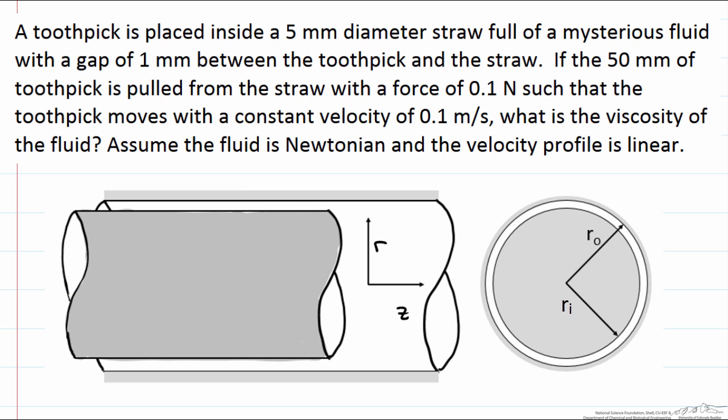So you can see I have drawn cylindrical coordinates, our radius in the vertical direction and our z axis in the longitudinal direction. We have some inner radius of our toothpick and some outer radius of our straw. Now what is happening is we are pulling this toothpick out.